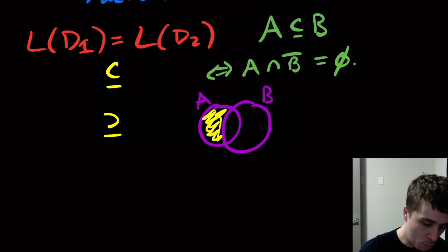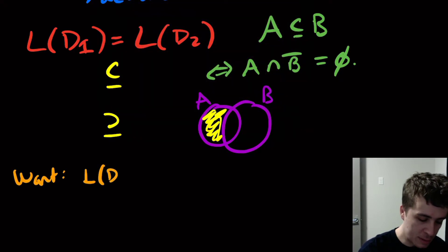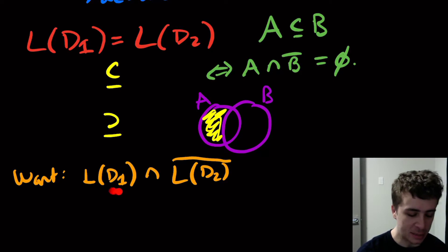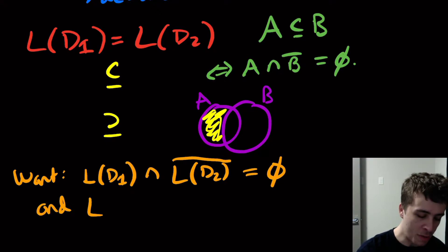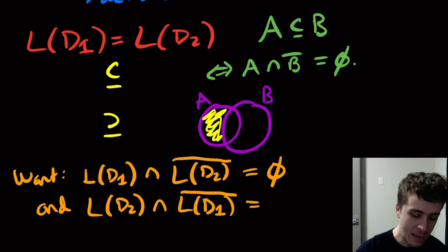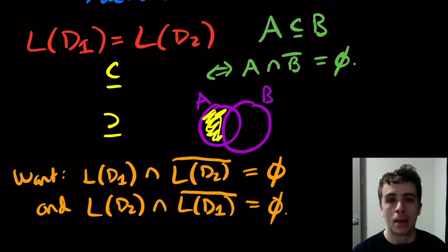We want both of those two sets to be the same. So we want L(D1) intersection the complement of D2, everything that D1 accepts that D2 doesn't, I want that to be empty. And I want the other direction, L(D2) intersection the complement of D1, I want that guy to be empty too. I want both of these to be empty.